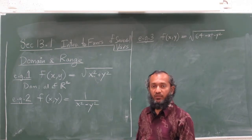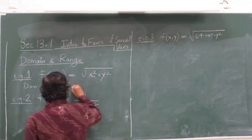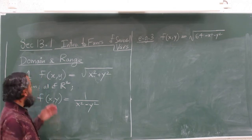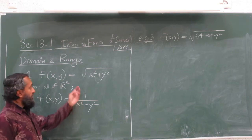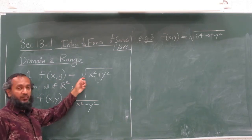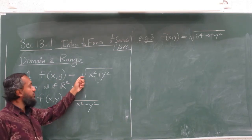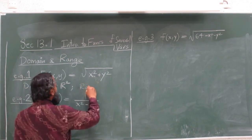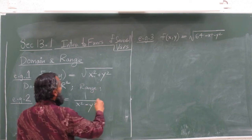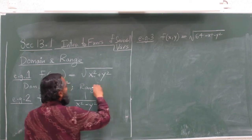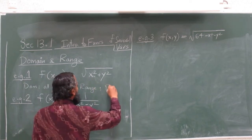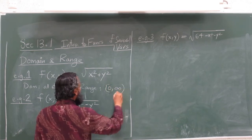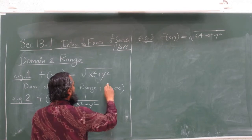The range is the set of all possible values of function outputs. Since this is the square root, and this convention means the positive square root, the values of the range would be from zero to infinity — all possible non-negative numbers.